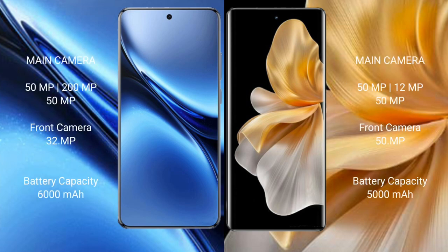Vivo X200 Pro features a triple rear camera setup: 50MP plus 200MP plus 50MP, and a 32MP front camera. Vivo S18 Pro features a triple rear camera setup: 50MP plus 12MP plus 50MP, and a 50MP front camera. Vivo X200 Pro has a 6000mAh battery with 90W fast charging support. Vivo S18 Pro has a 5000mAh battery with 80W fast charging support.